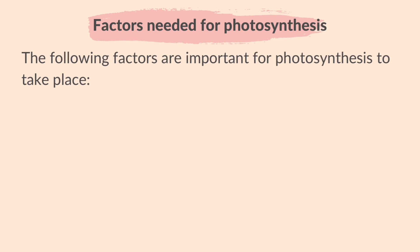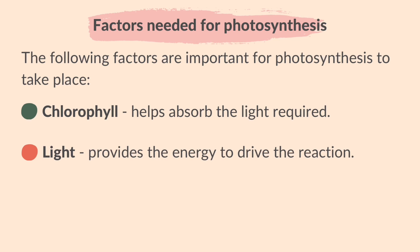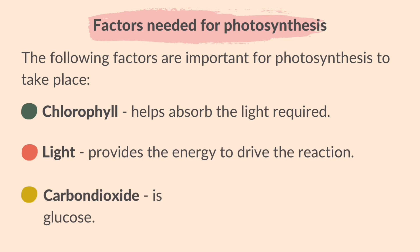The following factors are important for photosynthesis to take place. Chlorophyll is required because it helps absorb the light needed. Light is important because it provides the energy to drive the reaction. Carbon dioxide is important because it is converted into sugars such as glucose.